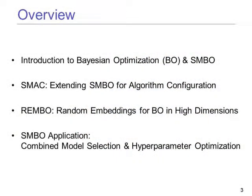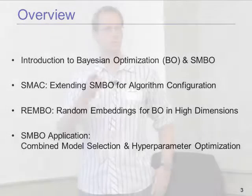Here's a quick overview of the talk. I'll first introduce Bayesian optimization, very much along the lines of what James talked about yesterday. Then talk about extensions to the problem of algorithm configuration — setting the parameters of an algorithm to optimize its empirical performance. Then talk about random embeddings for scaling up Bayesian optimization to very high dimensions, and an application of SMBO for combined model selection and hyperparameter optimization.